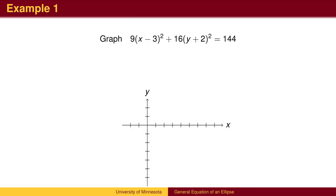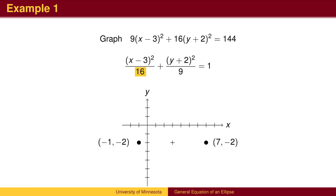For example, let's graph 9 times (x minus 3)-squared plus 16 times (y plus 2)-squared equals 144. We need the right-hand side equal to 1, so first we divide by 144 to get the ellipse in standard form. The center is at (3, -2). There will be vertices 4 to the left and right, since the x-squared term is divided by 4-squared. And there will be vertices 3 above and below center, since the y-squared term is divided by 3-squared. We can then sketch the ellipse.